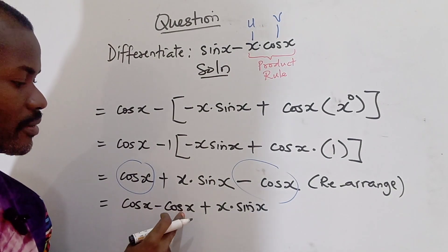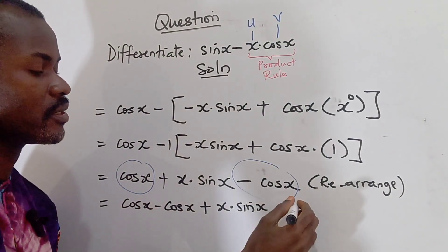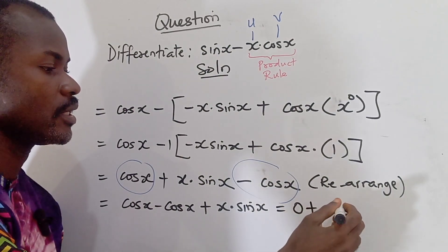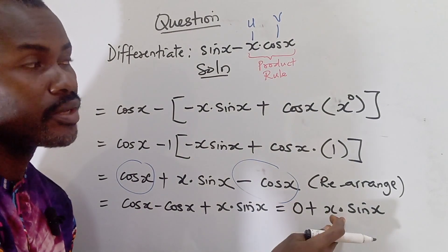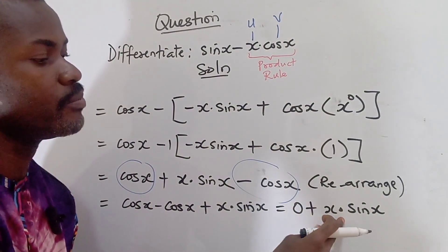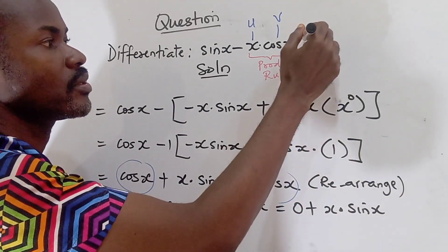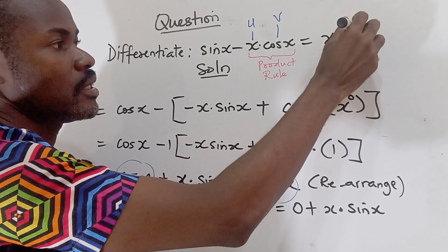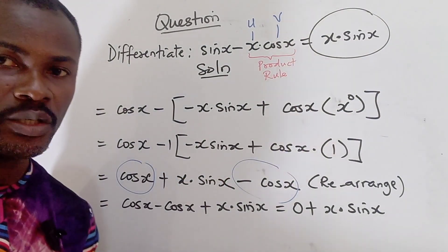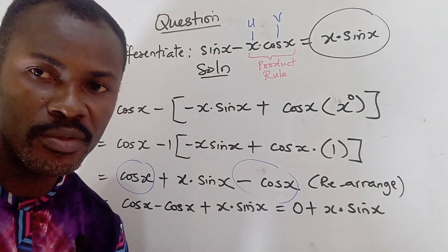So we have this as cos x minus cos x plus x multiply sine x. Now remember cos x minus cos x is going to give us 0 plus x multiply sine x. Now 0 plus this is simply going to give us x sine x. So the solution to this problem is x multiplied by sine x. So that gives us the solution to this problem.